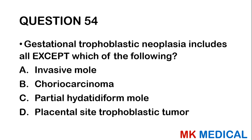Question fifty-four: Gestational trophoblastic neoplasia includes all except which of the following? A, invasive moles; B, choriocarcinoma; C, partial hydatidiform mole; D, placental site trophoblastic tumor. The answer is C — partial hydatidiform mole.